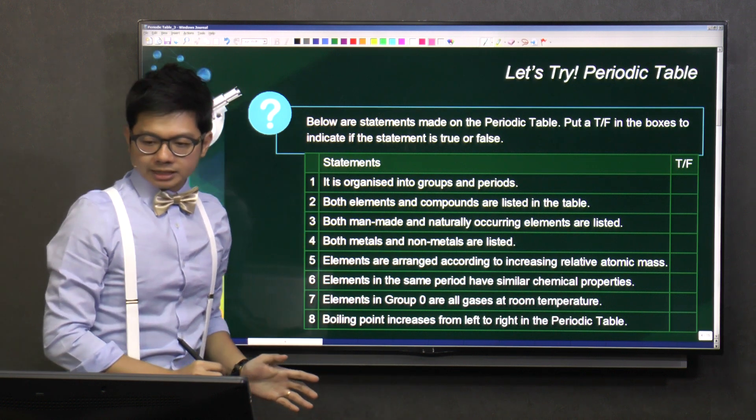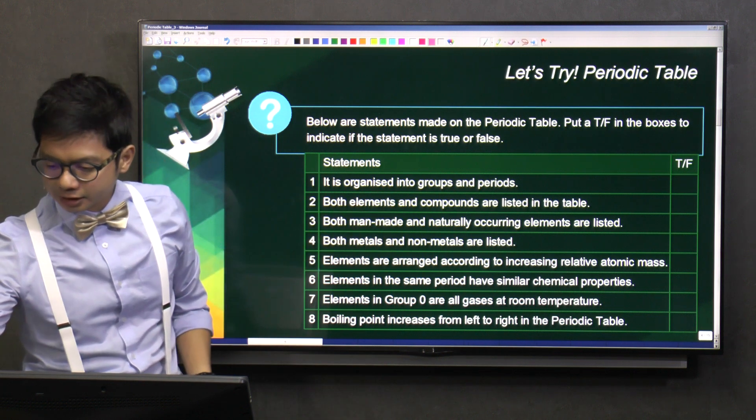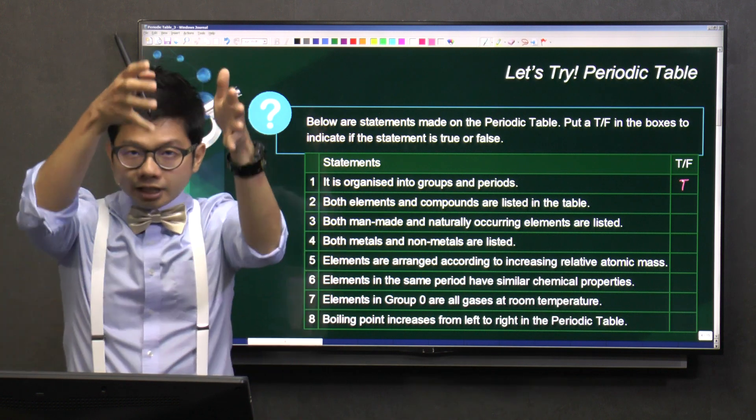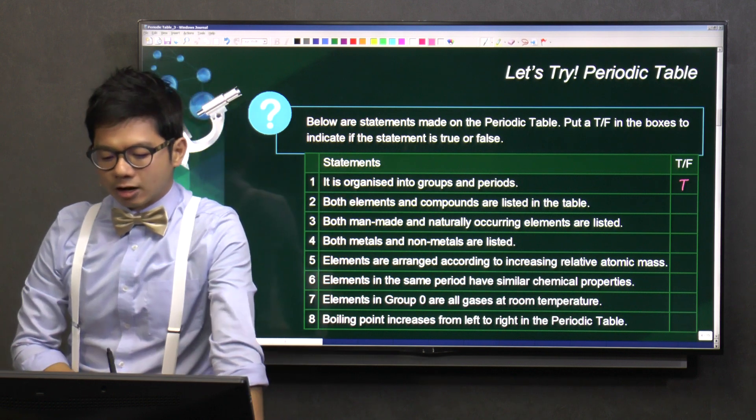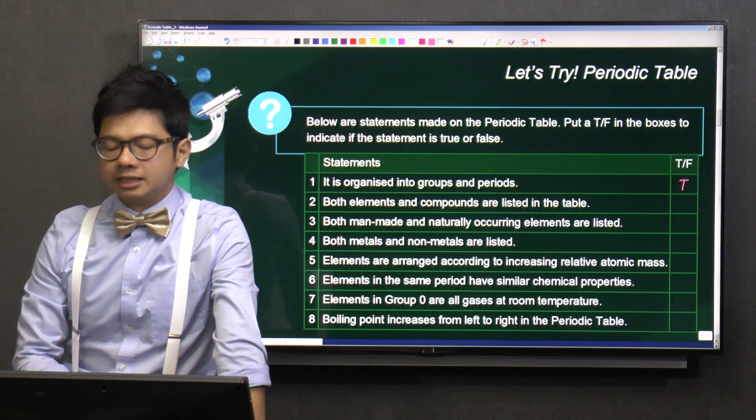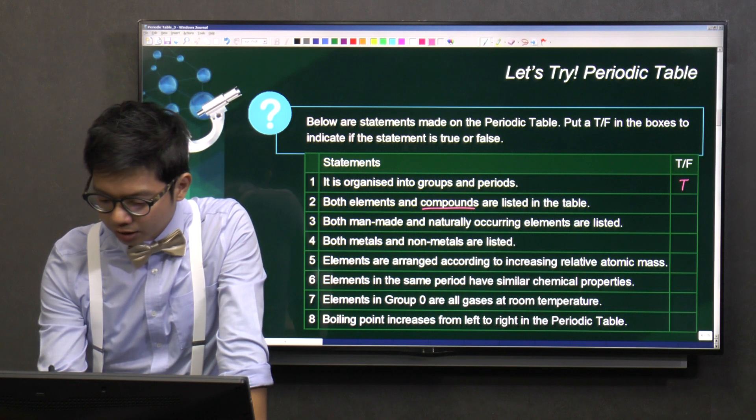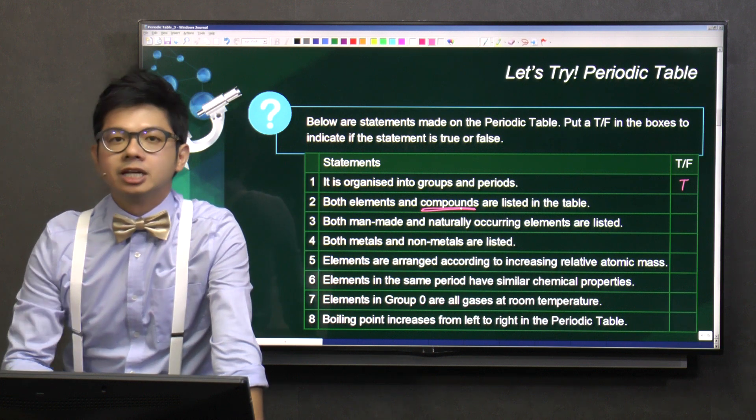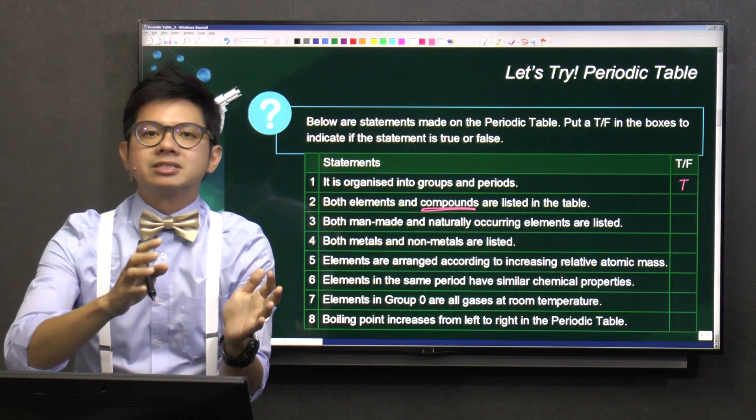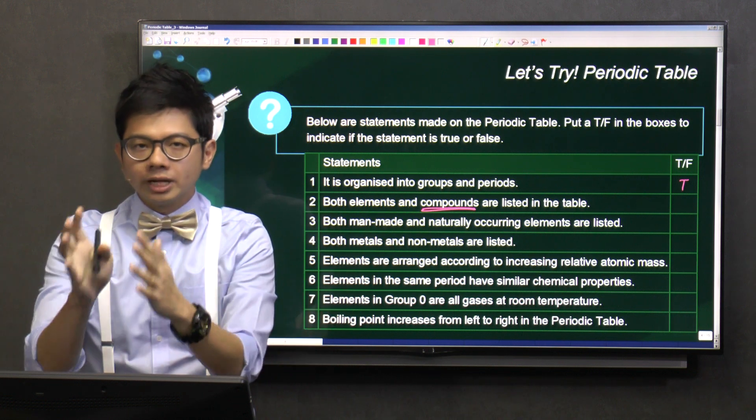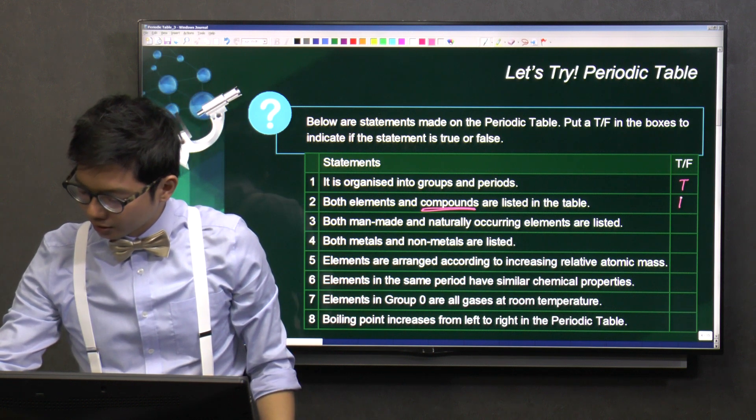Periodic table is organized into groups and periods. Definitely, this is true. Vertical groups, horizontal, it's called periods. Next, both elements and compounds are listed in the table. At this point of time, I know you might not have touched on this term called compound. But I tell you that the periodic table is basically the house for elements and not compounds. So it only house all the elements, not compounds. So this has to be false.